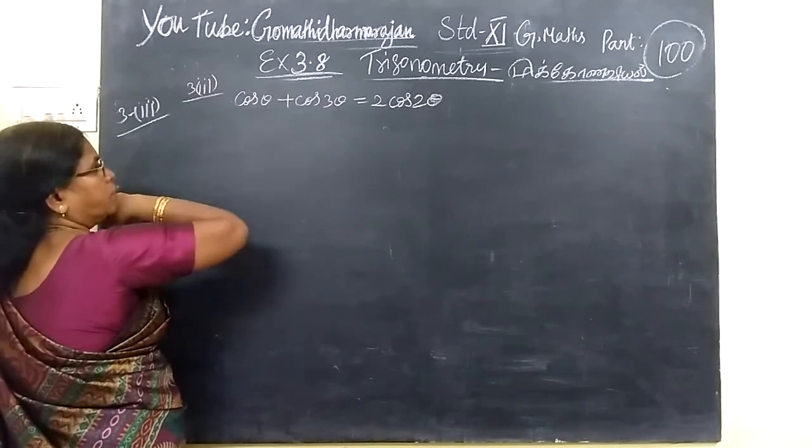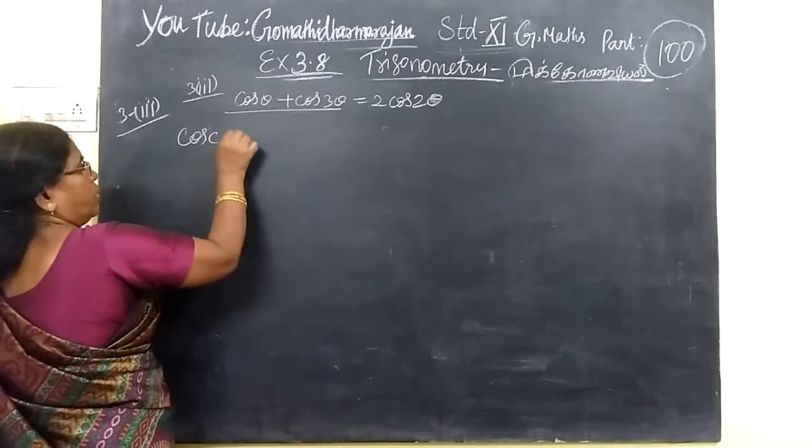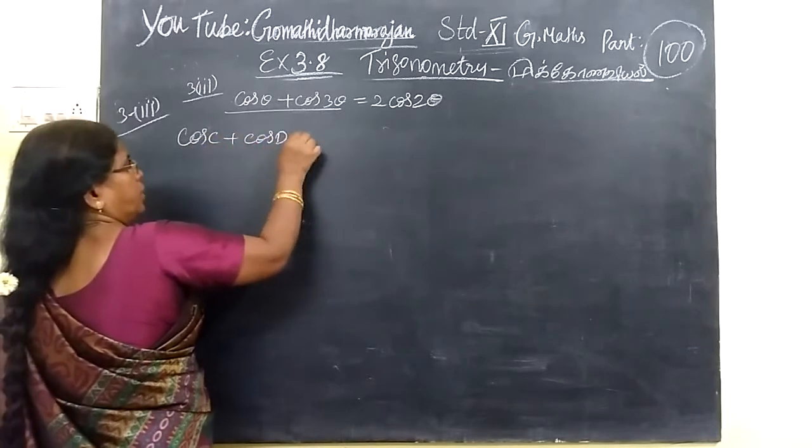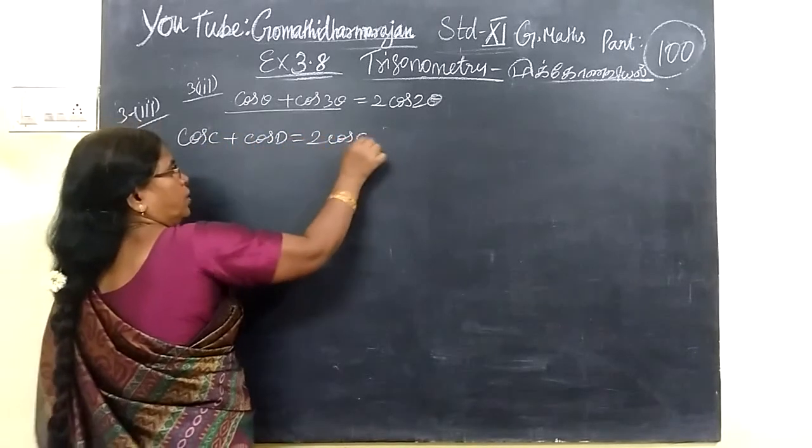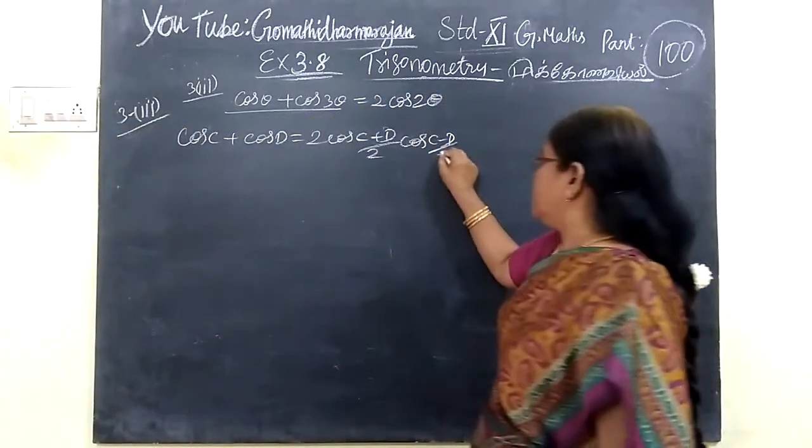Here you write cos 3θ term. This is of the form cos 3θ plus cos θ, so cos 3θ plus cos θ equals 2 cos(3θ plus θ)/2 into cos(3θ minus θ)/2.